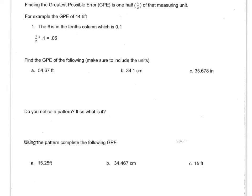In this lesson, we're going to learn how to find the greatest possible error when taking measurements. You can see at the top it says finding the greatest possible error is one half of that measuring unit.